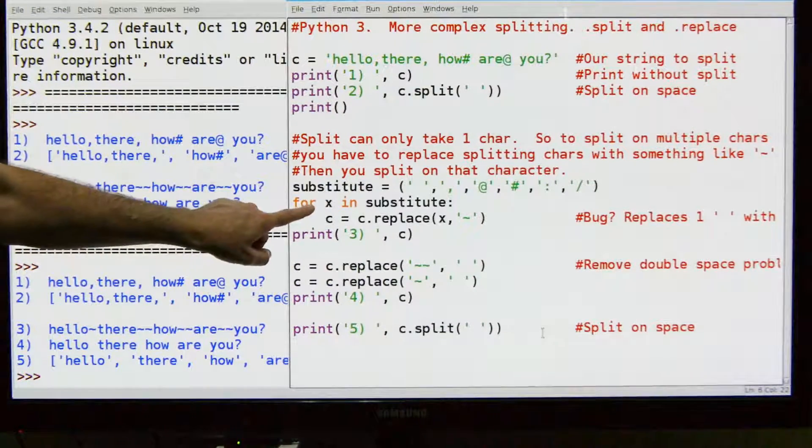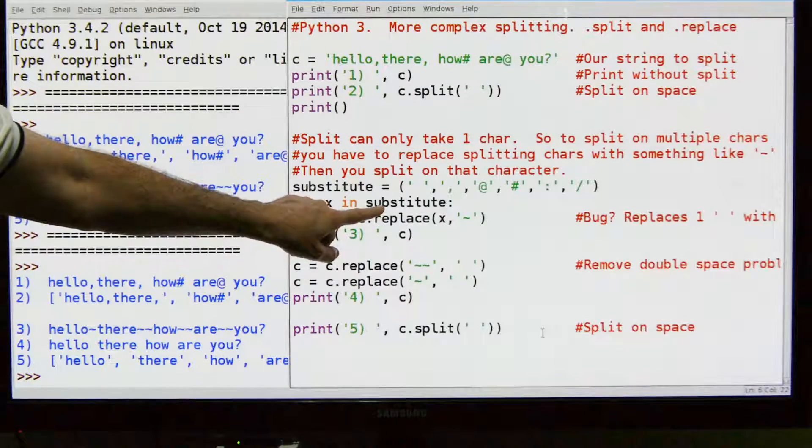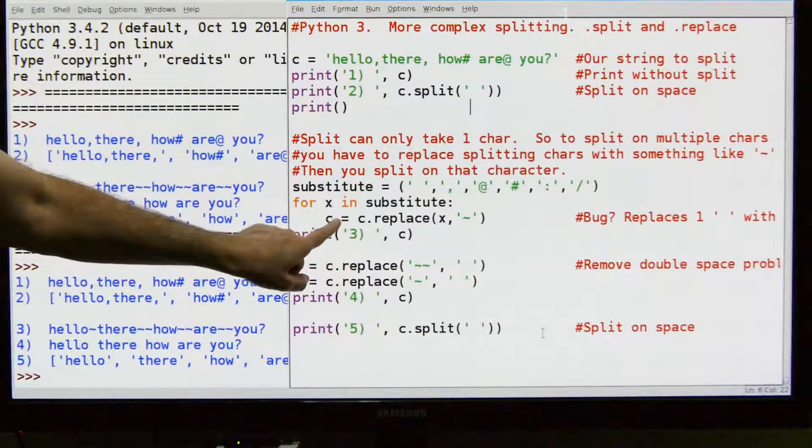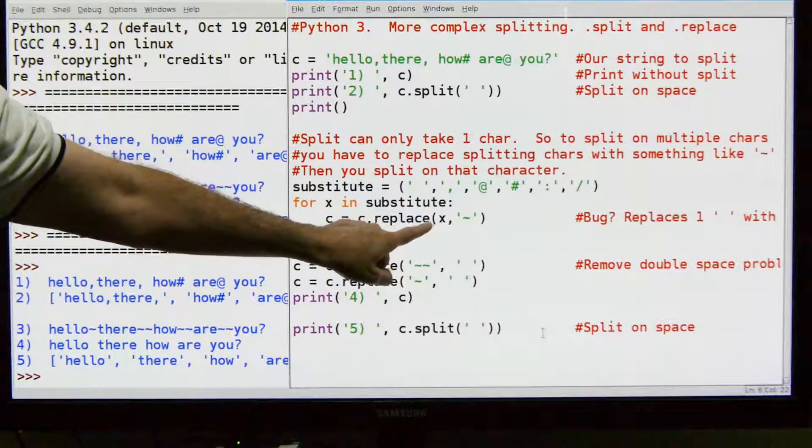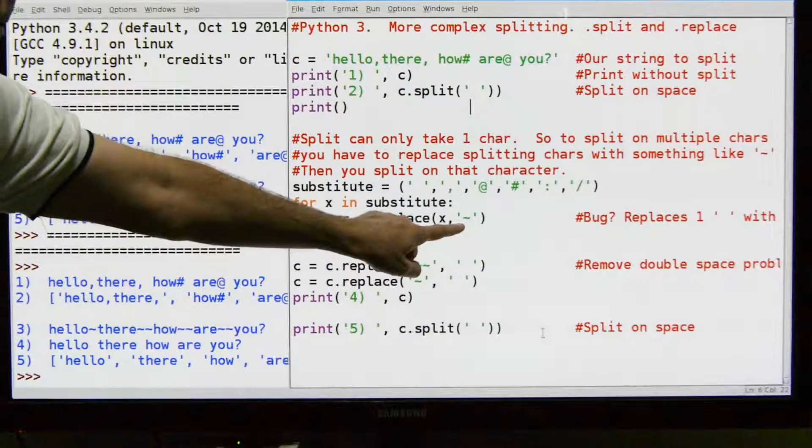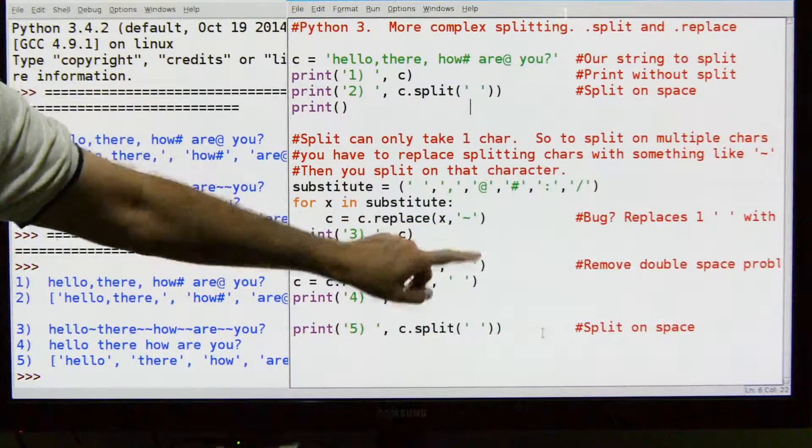Then we're going to do a loop here. We're going to say for x in substitute which is this list right here. We're going to go through and we're going to do a replace on the C string on x and we're going to replace those values with tilde.